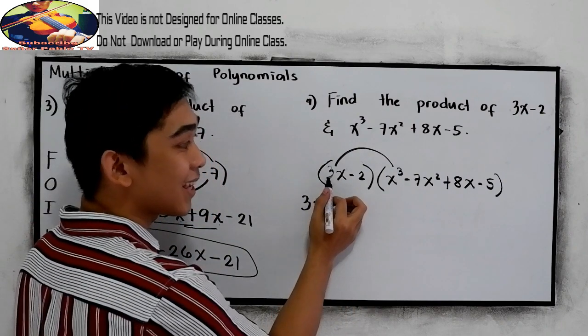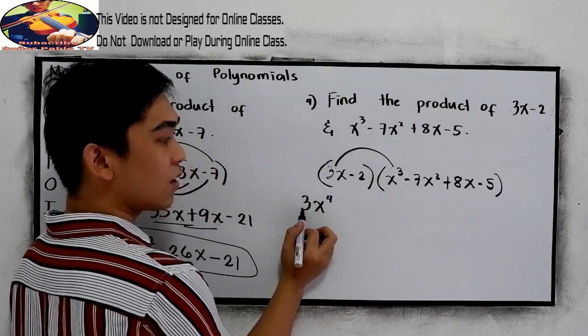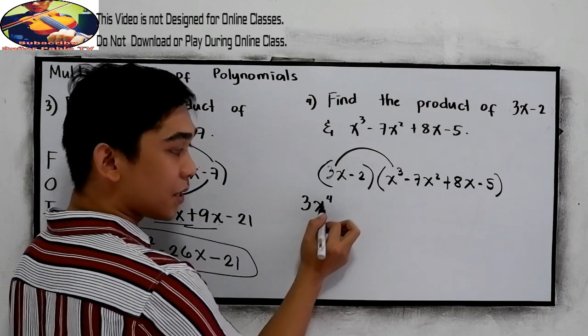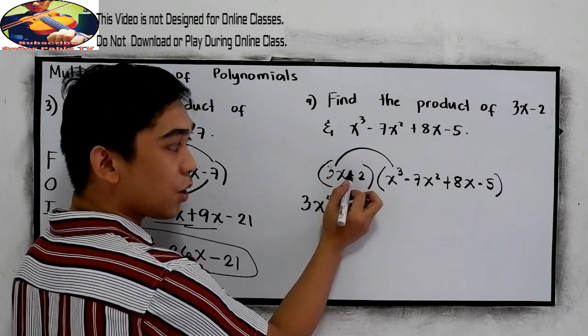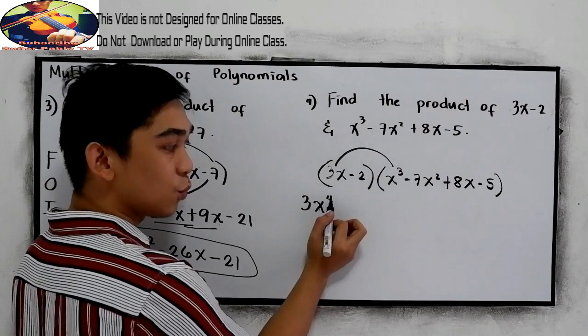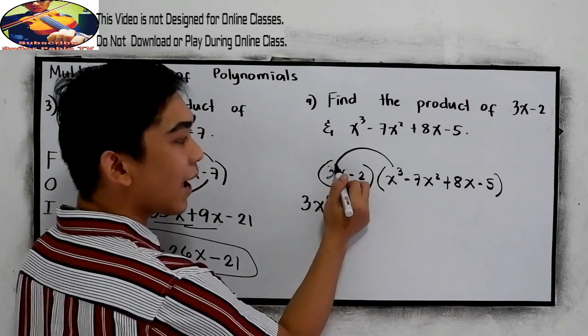Again, let us repeat. 3 times 1, that's why we have 3 here. Copy the x. And add the exponent, 1 plus 3, which is 4.